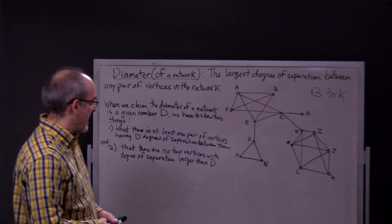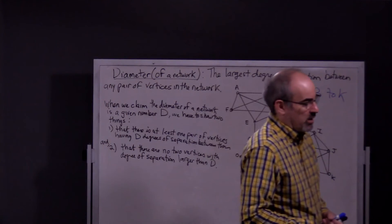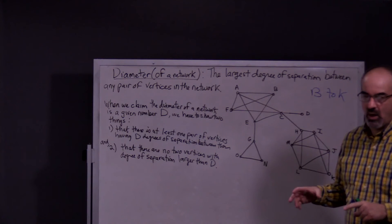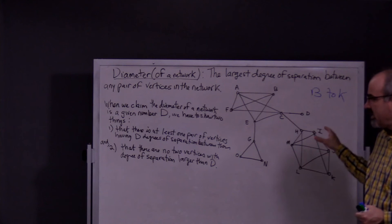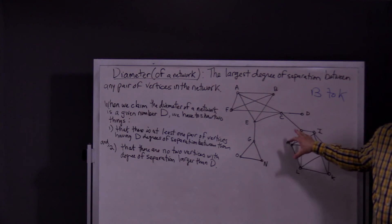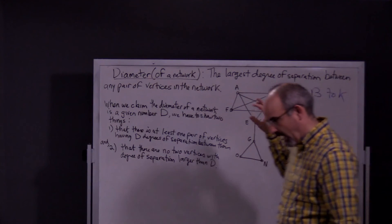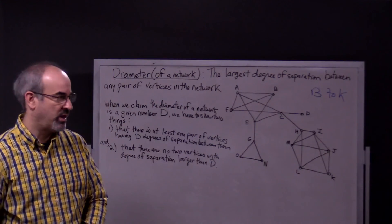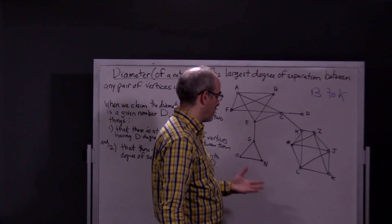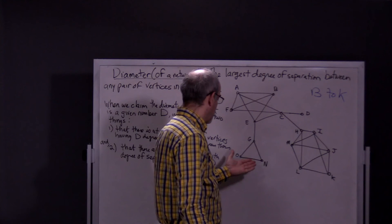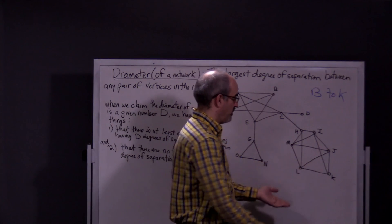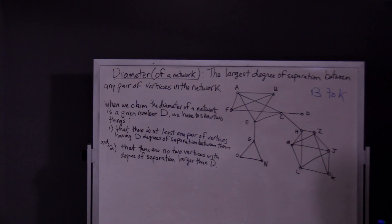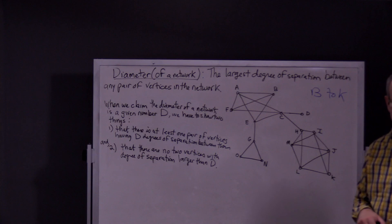So six is the largest, and the diameter of this network is six because the largest degree of separation between any pair of nodes or vertices in the graph is six. There's no easy way to find it other than just looking at the graph and seeing how long a path is from one vertex to another. It makes sense to look for the longest path between vertices that are in opposite clusters. Six is the diameter of this network, and in the next video I'm going to talk about trees.